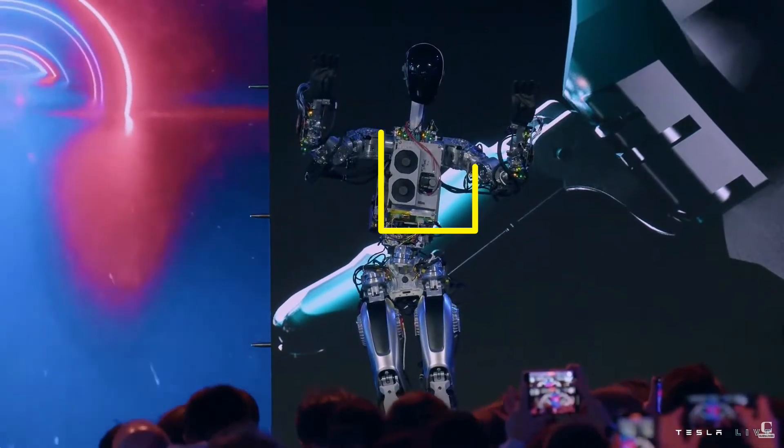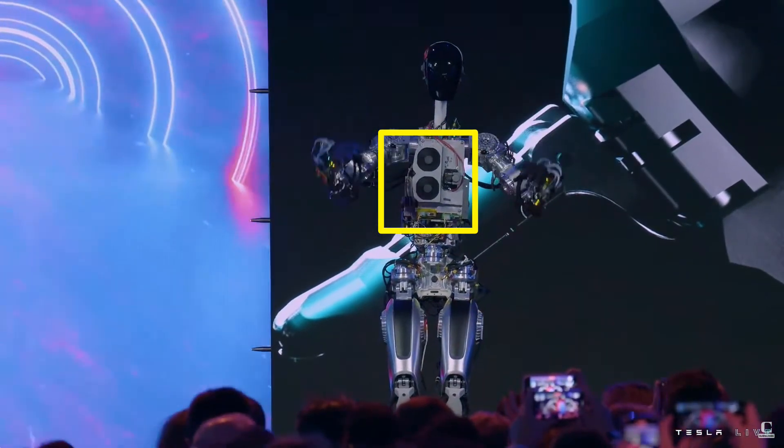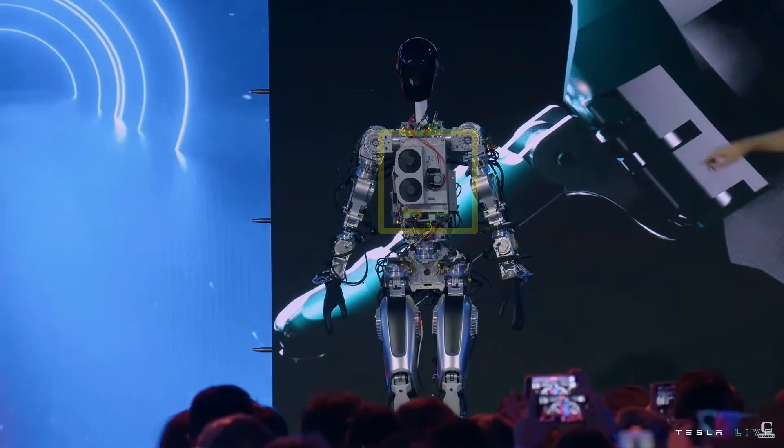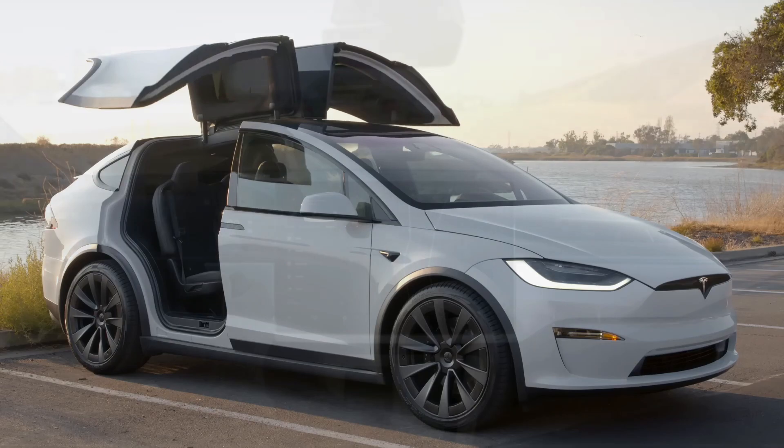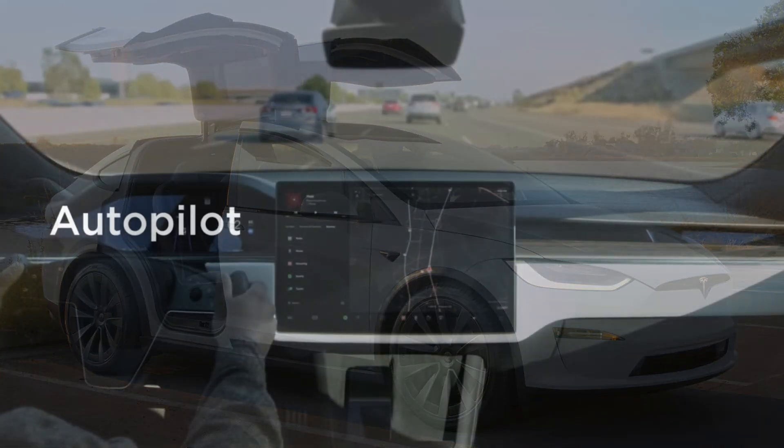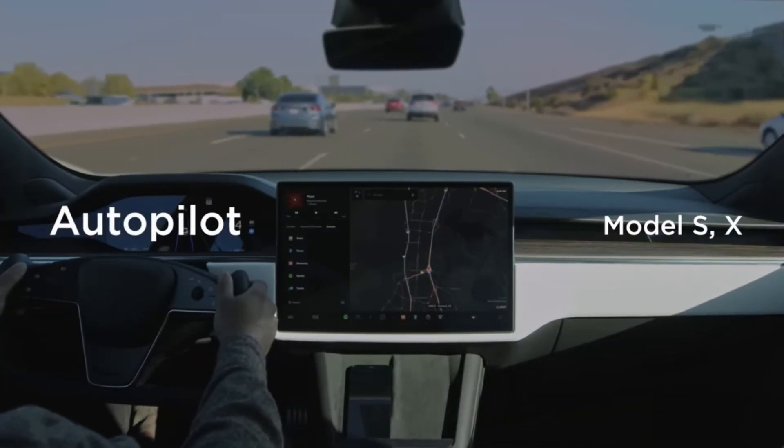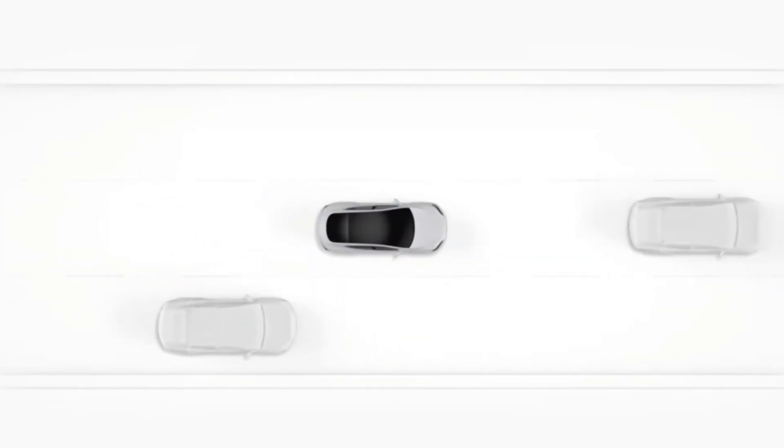The true breakthrough in this robot is here. This is the computer that controls a Tesla automobile. A Tesla car is not, I would argue, really a car. It is a robot that has wheels and transports people. This robot was designed to be smart enough to drive itself. I have owned and driven a Tesla Model 3 and a Model X, and there is nothing else in the world like them.